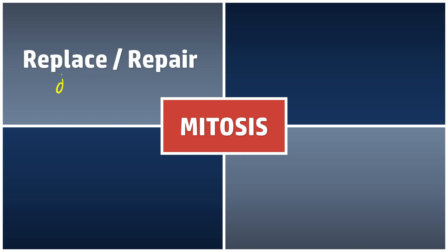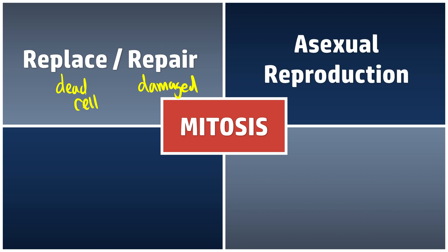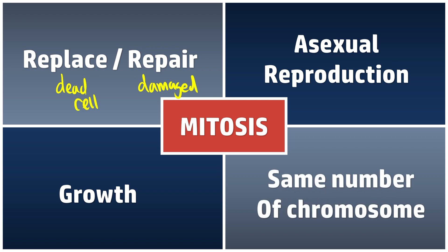What are the benefits of mitosis? Mitosis helps us replace dead cells and repair damaged cells. It supports asexual reproduction and also supports growth — this is why you become taller year by year. And it produces daughter cells that have the same number of chromosomes as the parent cell. To remember these, use the acronym DRAGS: D — replace Dead cells, R — Repair damaged cells, A — Asexual reproduction, G — support Growth, S — Same number of chromosomes in daughter and parent cells.